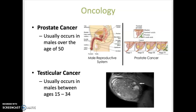Prostate cancer usually occurs in males over the age of 50. Treatment often includes radiation and sometimes a prostatectomy, which is a surgical removal of the prostate. Testicular cancer, on the other hand, usually occurs in younger males between the ages of 15 and 34. Treatment can include removal of the testes along with radiation and chemotherapy.